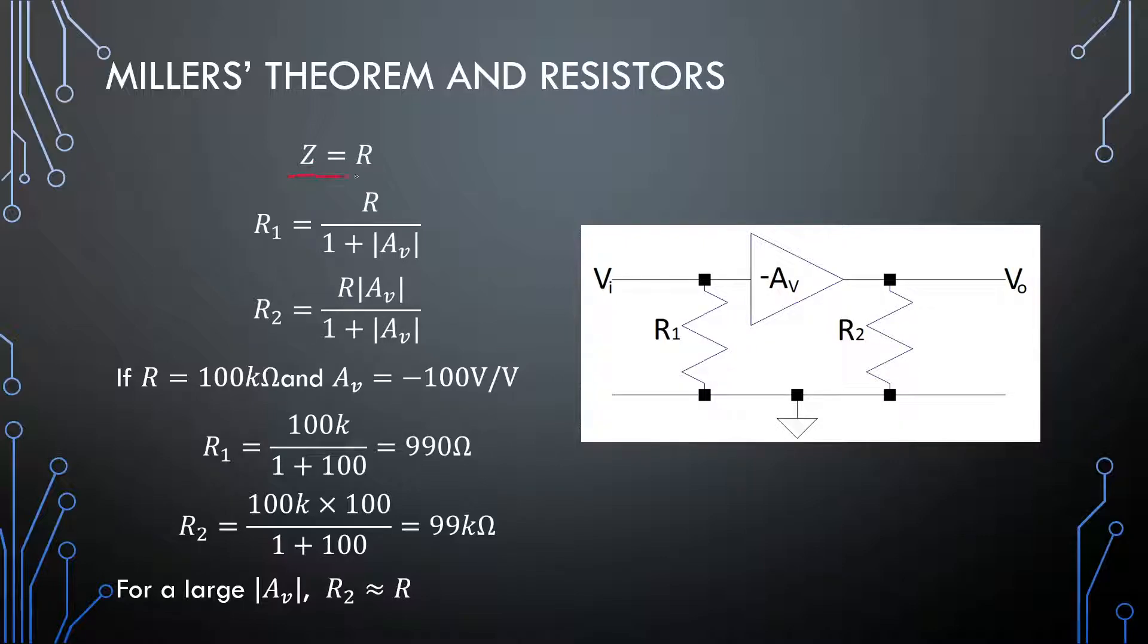So for resistors, our impedance is equal to R, so basically the resistor form. And then we just make this R1 and R2 and it looks exactly the same as the original form of Miller's theorem. So the feedback resistor over here was split into two parts.